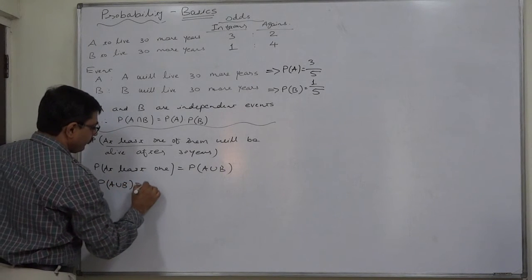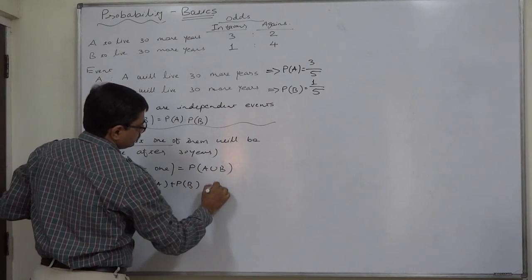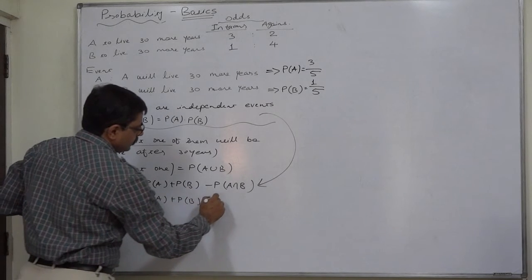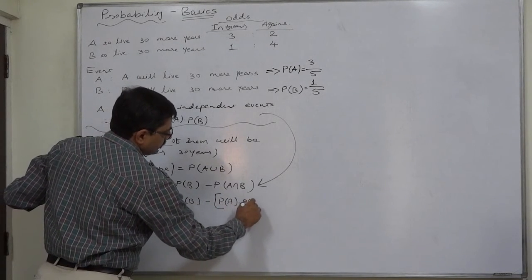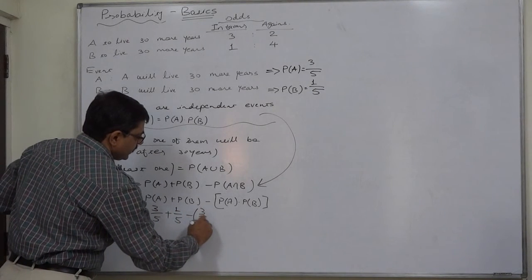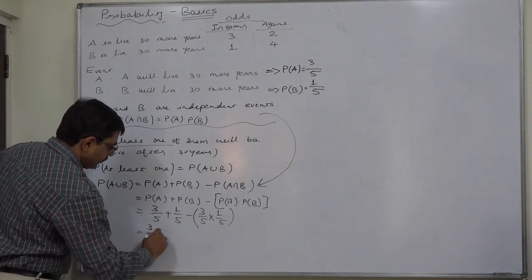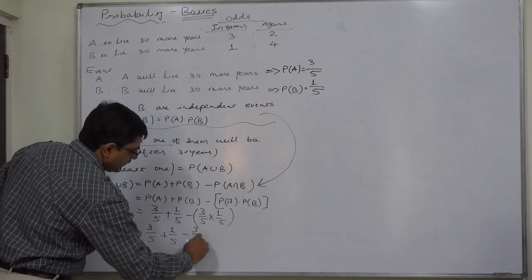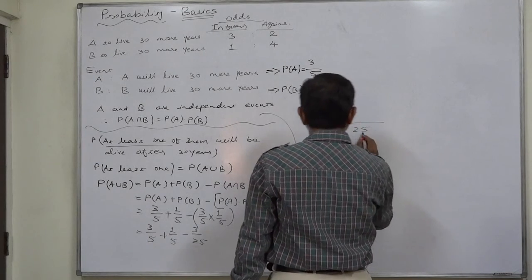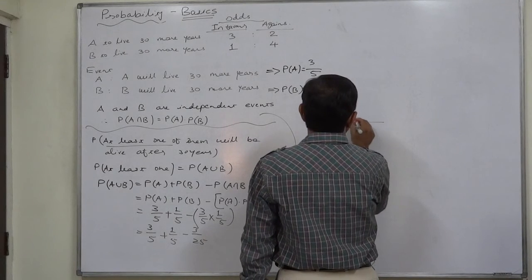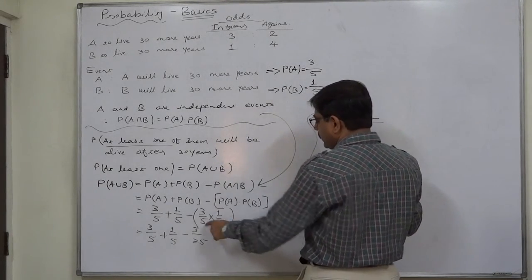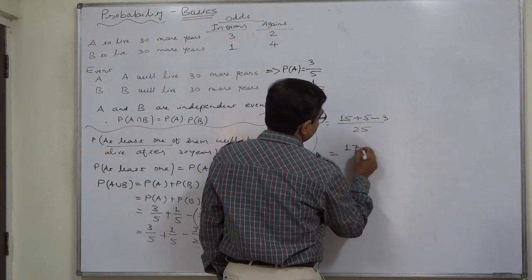Now substitute into the formula for union. Since A and B are two independent events, P(A ∪ B) = P(A) + P(B) − P(A) × P(B) = 3/5 + 1/5 − (3/5 × 1/5) = 3/5 + 1/5 − 3/25. Taking 25 as the common denominator: 15/25 + 5/25 − 3/25 = 17/25.